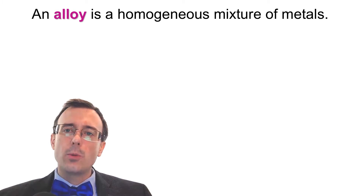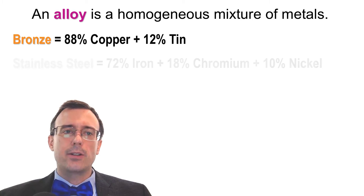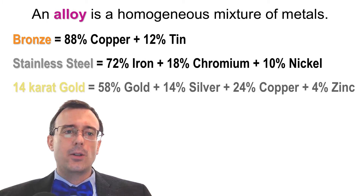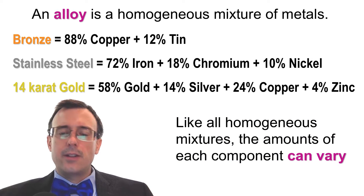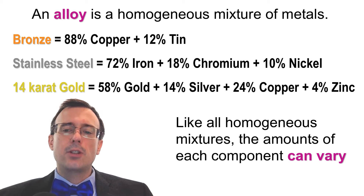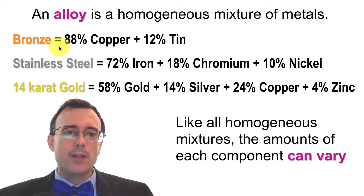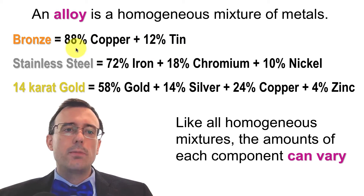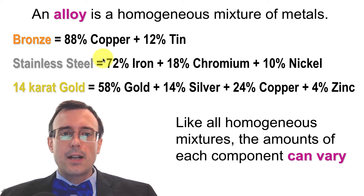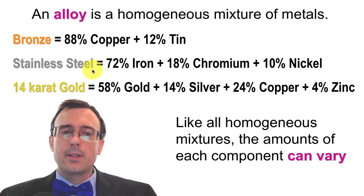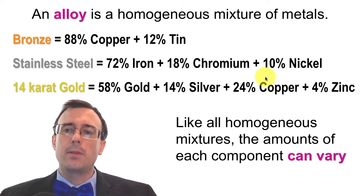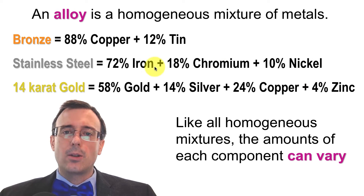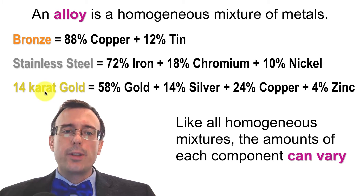An alloy is a homogeneous mixture of metals. There are a whole bunch of different alloys known — for example, bronze, stainless steel, and gold. It's important to note that, like all homogeneous mixtures, the amounts of each component can vary. For example, bronze is often described as 88% copper and 12% tin, but it doesn't have to be — you could make it 85% copper and 15% tin, or throw in some other metal. One of the most common types of stainless steel is 1810, which is 18% chromium and 10% nickel, but the amounts of iron, chromium, and nickel can vary, and you can even have other metals in there too. Typically, the gold you buy is not going to be pure gold — oftentimes it's got other stuff mixed in.